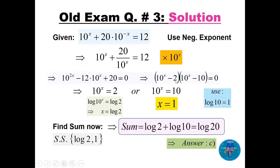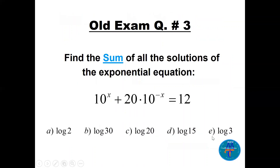Factoring gives (10^x minus 2)(10^x minus 10) equals 0, so 10^x equals 2 or 10^x equals 10. From the second, x equals 1. From the first, taking log of both sides gives x equals log 2. The sum of solutions is log 2 plus 1. Since 1 equals log 10, the sum is log 2 plus log 10 equals log 20. The answer is C.